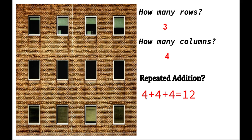That means that we have four here in row one, four here in row two, four here in row three. So if we write the repeated addition, we would have four plus four plus four — three groups of four. Four plus four is eight, plus four is 12.